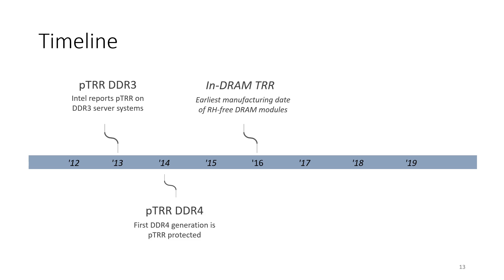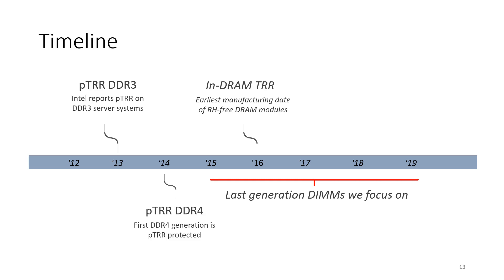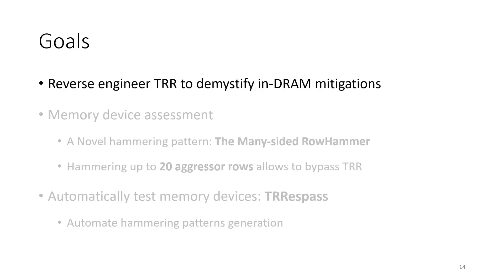Pseudo target row refresh was introduced in 2013 by Intel to protect DDR3 systems, and it can be found even in the first generation of DDR4 modules. Our analysis on a sample of 42 DIMMs shows that INDRAM TRR has been deployed only since 2016. Previous work has investigated the effectiveness of memory controller mitigations, and reports of bit flips on DDR4 devices have questioned the effectiveness of target row refresh. Our work is the first focusing on INDRAM implementations of target row refresh on the last generation of DDR4 devices, built mainly after 2016.